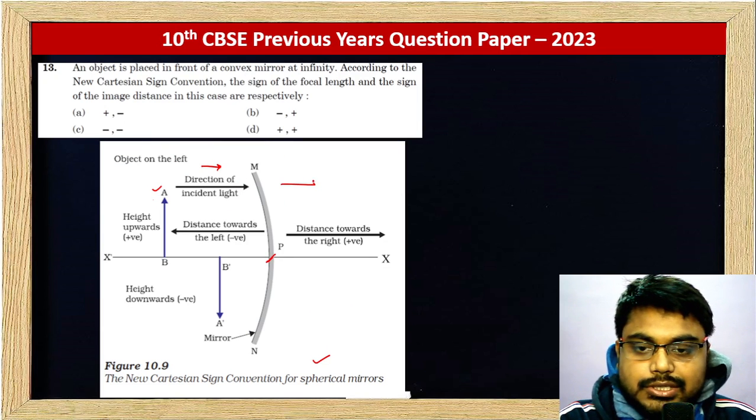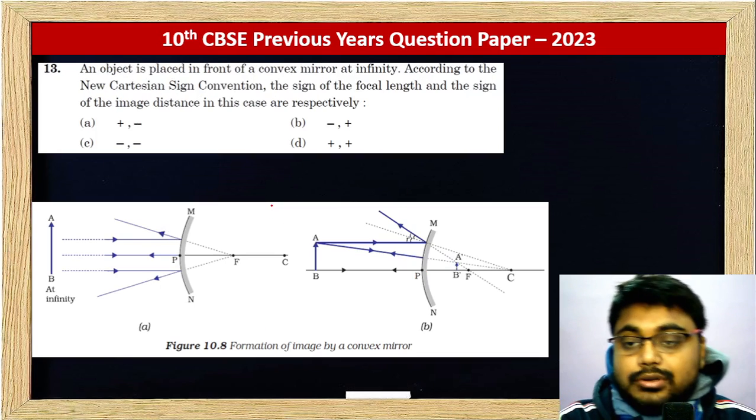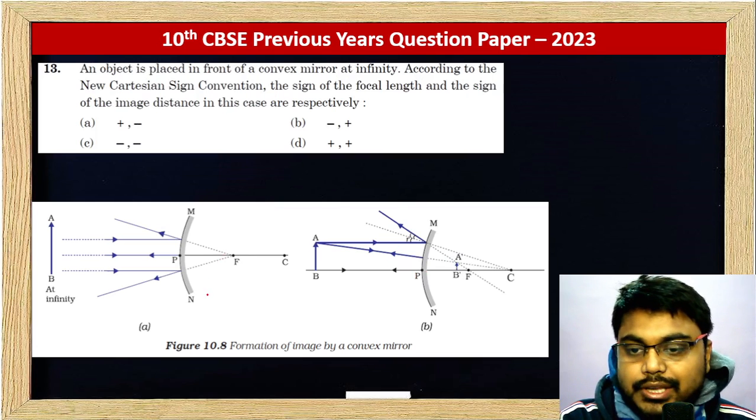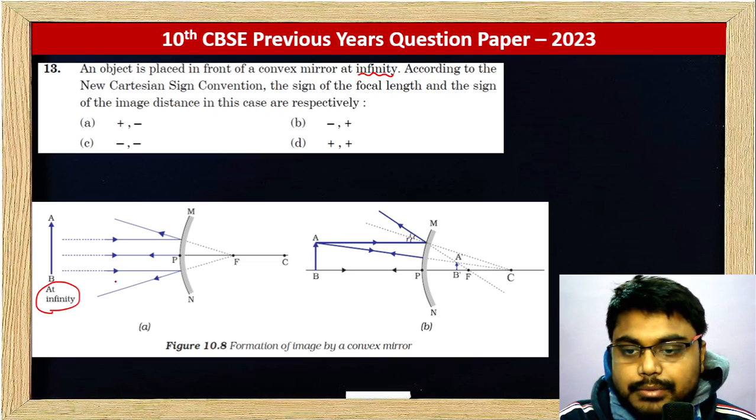The pole is in this direction. Now let's take a convex mirror. The object is at infinity, this is the direction of incident light.